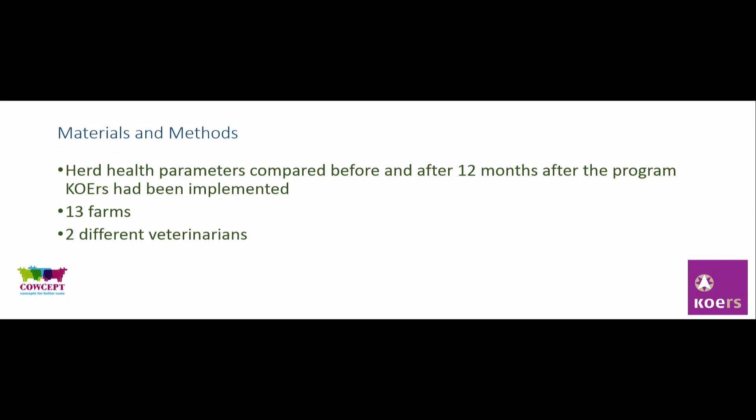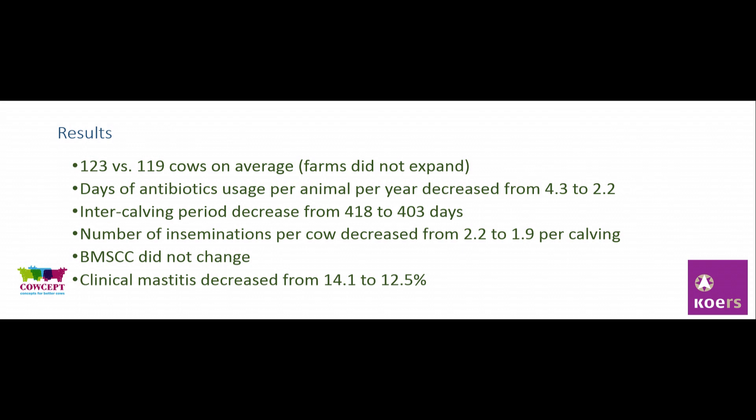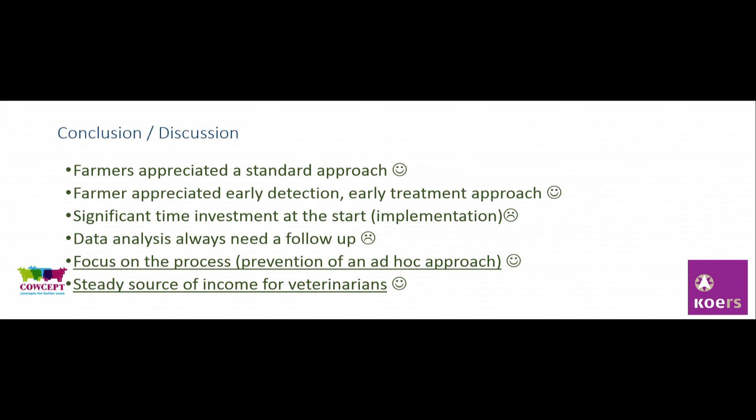We looked at 12 months before the system started and 12 months after it was implemented. The results: herd size didn't decrease. Antibiotic use — measured as daily dosage, a new measurement in our country — halved. Those farms actually used half the antibiotics they did before. The inter-calving period decreased by almost 14 days. The number of inseminations per cow per calf decreased from 2.2 to 1.9. The bulk somatic cell count didn't change significantly, but clinical mastitis actually decreased as well.